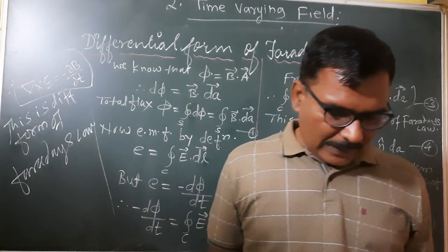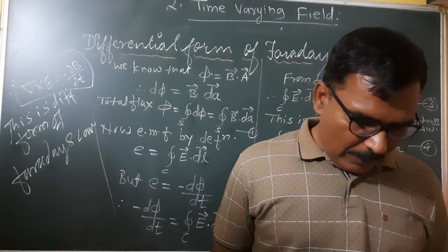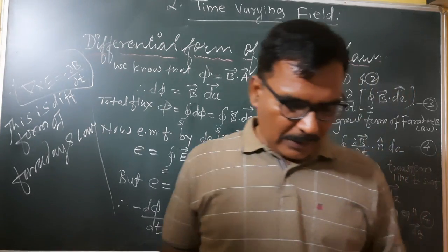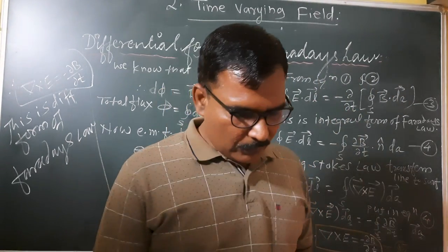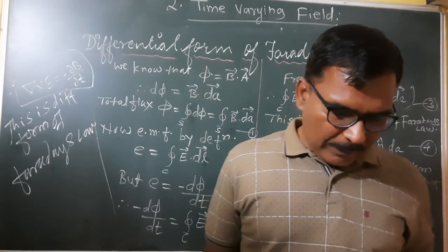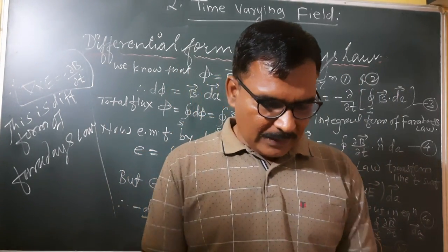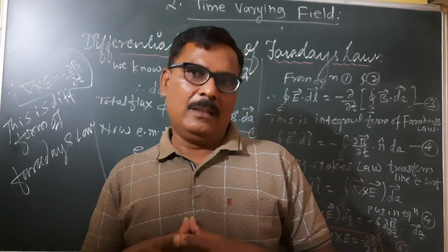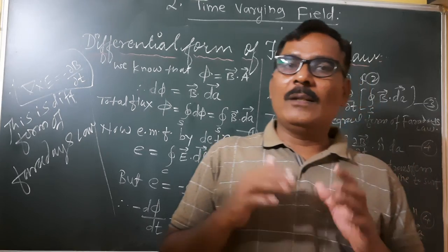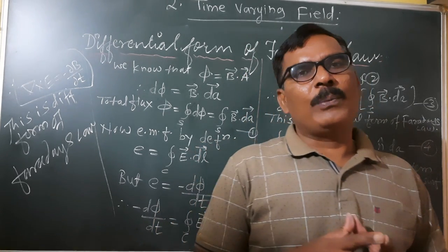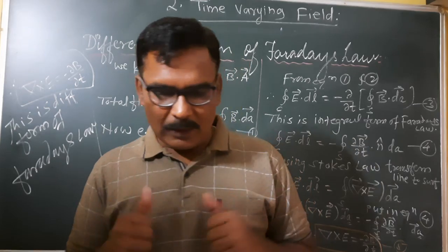This is a very important law and questions may be asked on it, worth 5 to 10 marks. Lenz's law represents the conservation of energy. Faraday's experiment involves a coil with a magnet — north pole and south pole — which we have already discussed in 12th standard. This differential form of Faraday's law of electromagnetic induction is very important. Write down all the things.